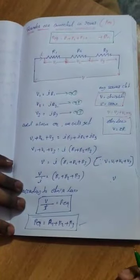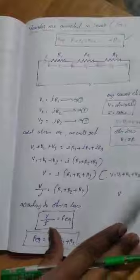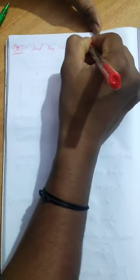From this formula we have to find R equivalent when resistors are connected in series. For example, take example number 1: find R equivalent when resistors 30 ohm, 20 ohm, and 60 ohm are connected in series. This is the problem — we have to find R equivalent.